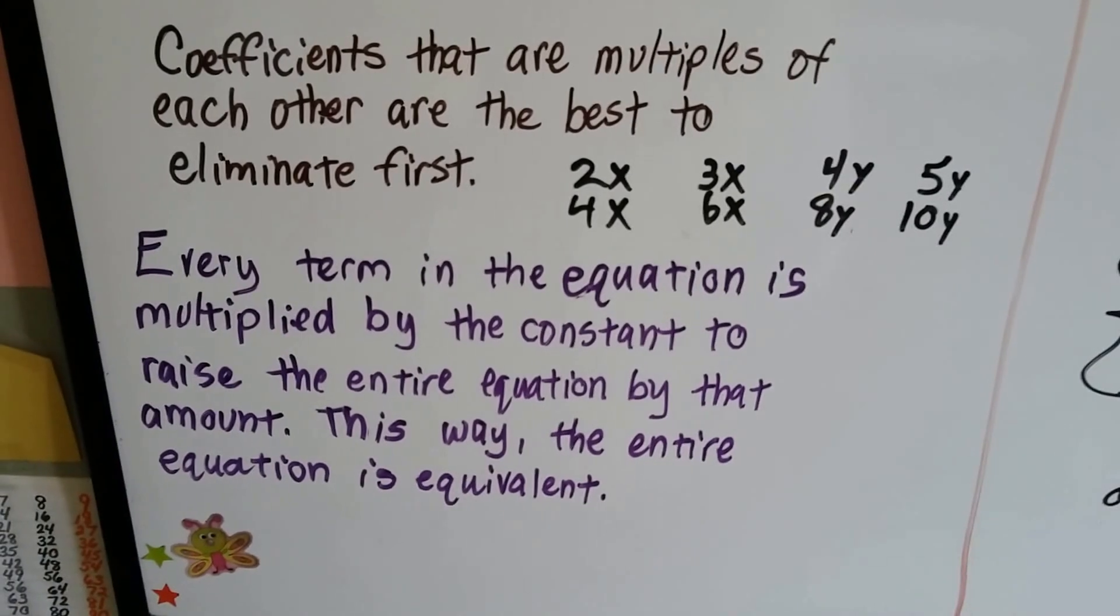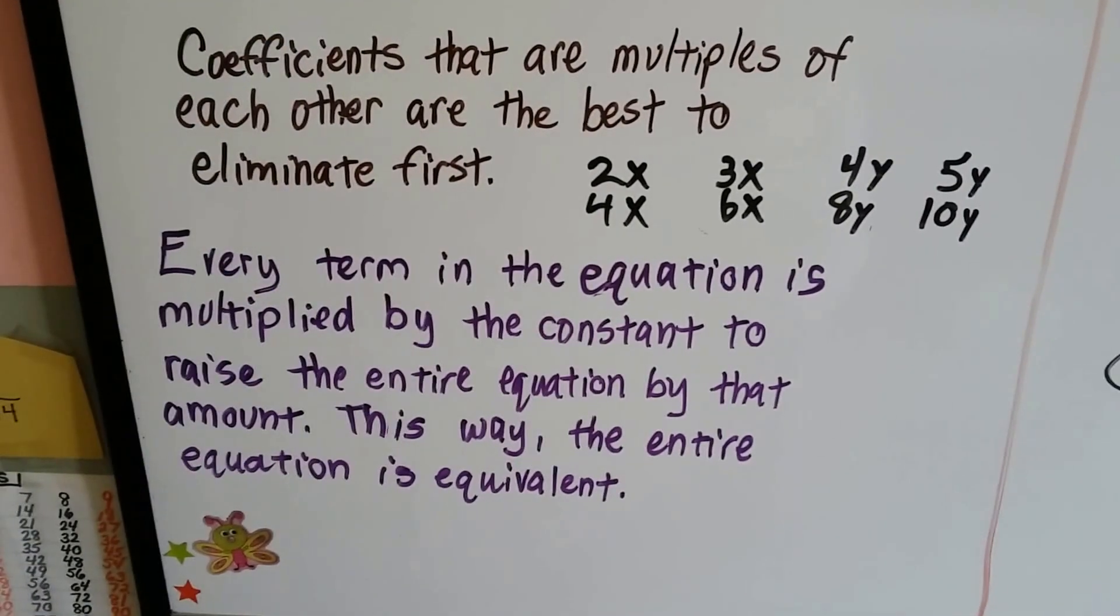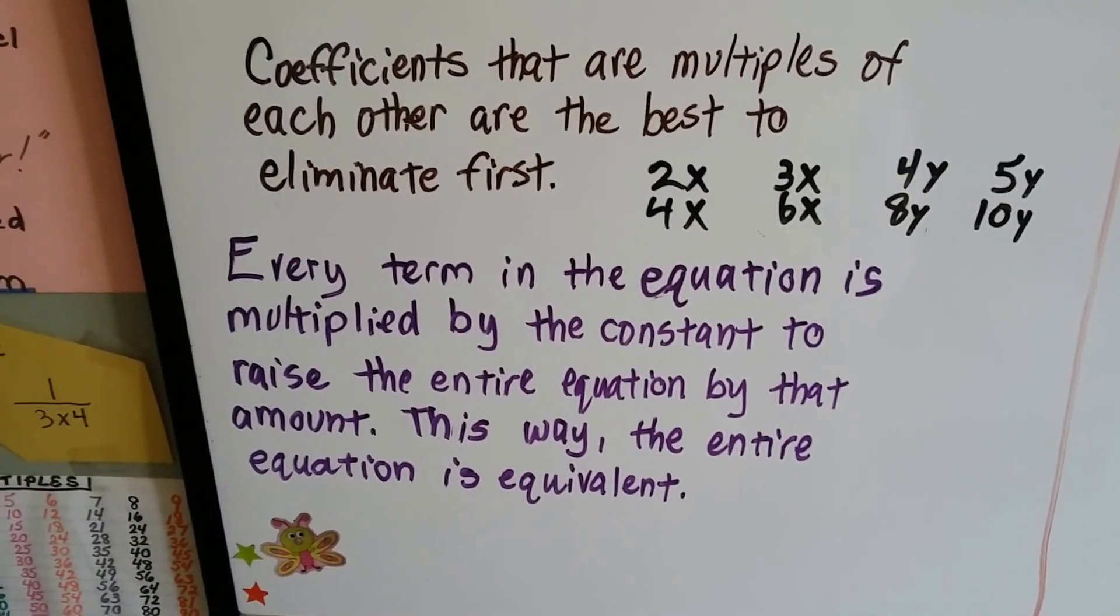Every term in the equation is multiplied by the constant to raise the entire equation by that amount. That way the entire equation is equivalent.